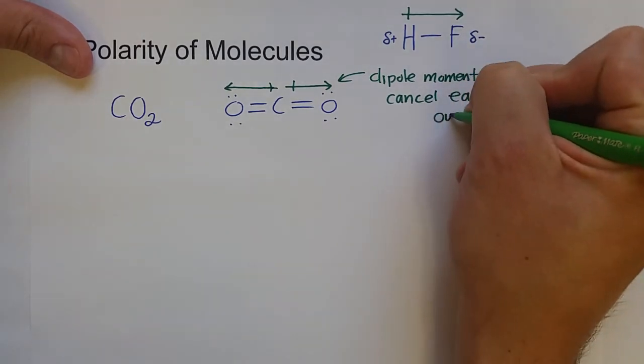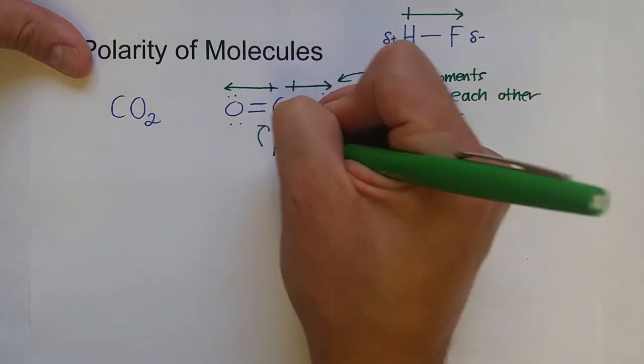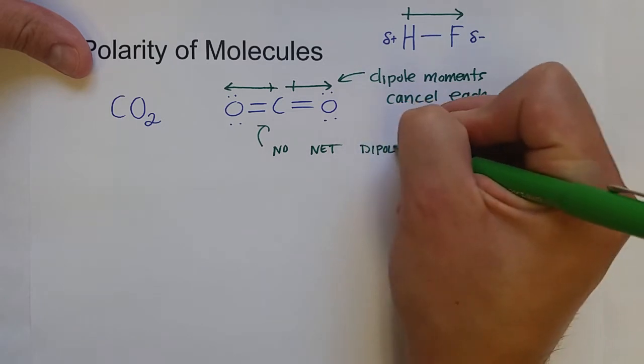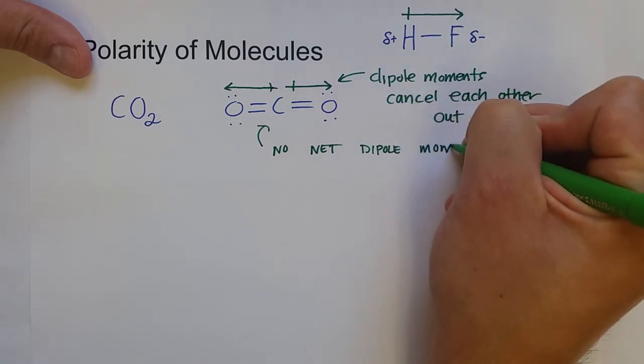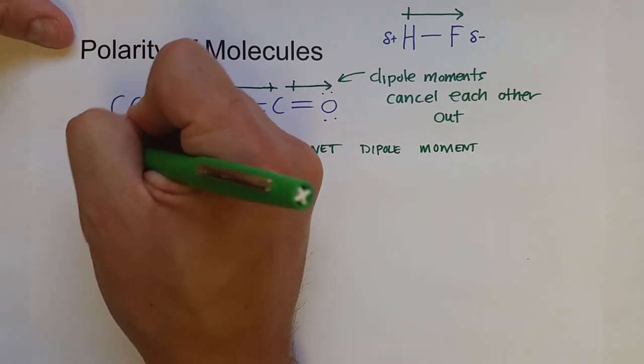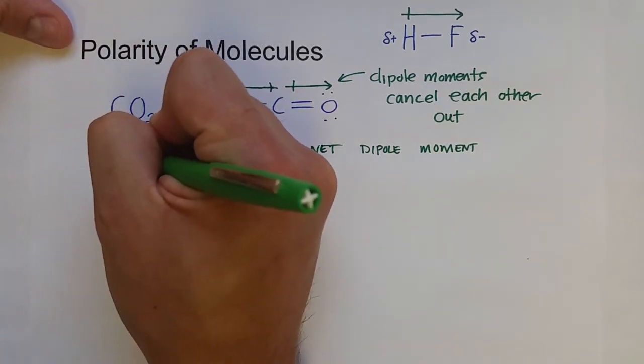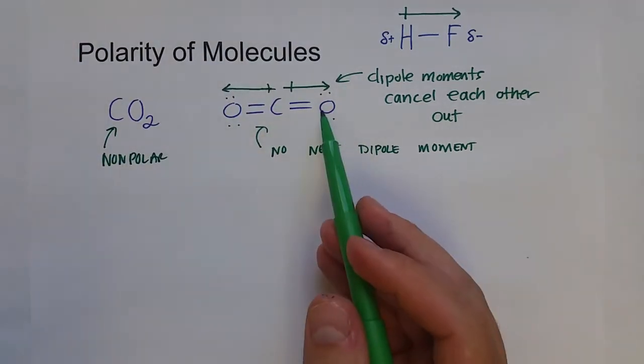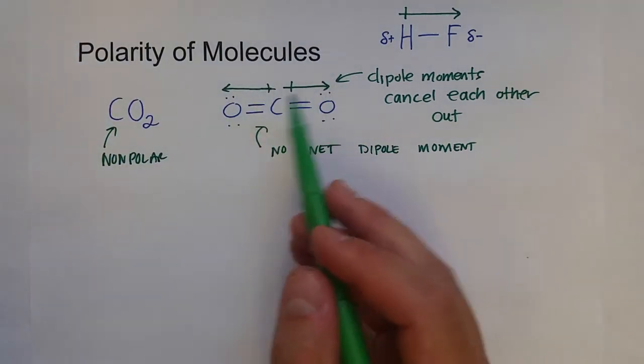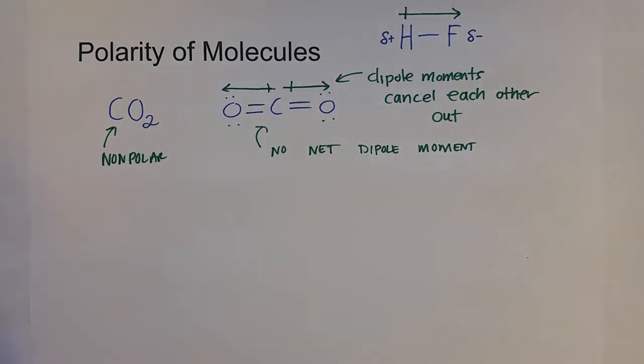And so there's no net dipole moment. And so CO2 is a non-polar molecule. Even though it has dipole moments and very electronegative atoms, because of the molecular geometry, it turns out to be non-polar.